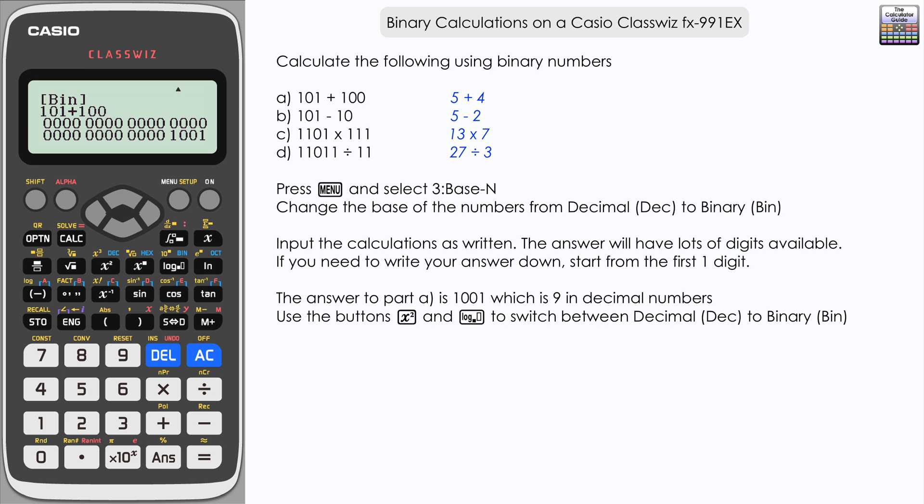Let's do the second one, 101 subtract 10. Here we have our answer one one which would be three. Then straight into the next one, it's relatively straightforward, one one zero one multiplied by one one one.